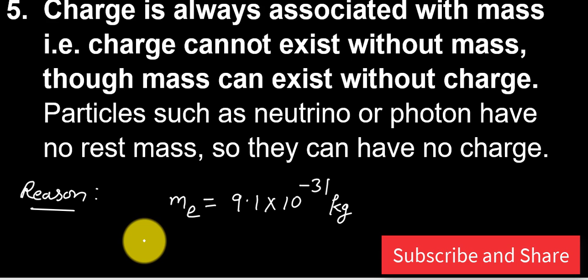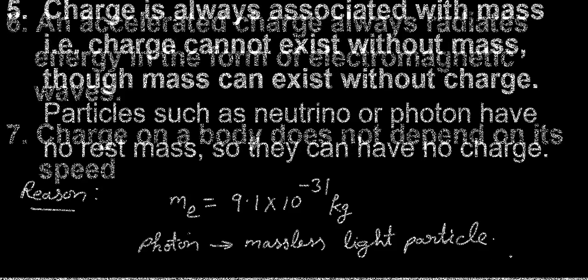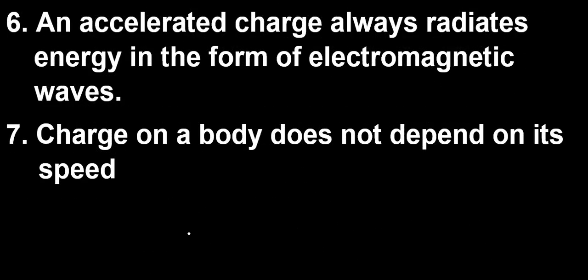This is the reason why we cannot transfer charge to a photon. This is a very important point that charge cannot be transferred to the photon as it is a massless light particle. Sixth property is an accelerated charge always radiates energy in the form of EM waves. It will be discussed in EM waves.